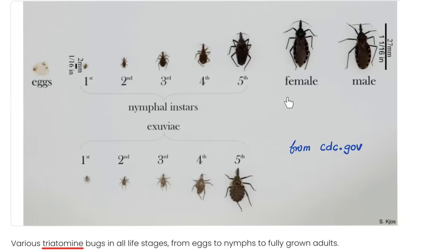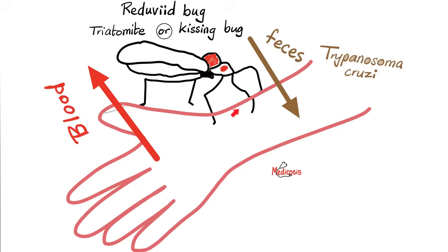Here's the triatomine, or the reduviid bug, or the kissing bug — and these are the eggs. This kissing bug is going to come and bite you, creating an open wound in your skin. Step one: the bug sucks your blood — a warm blood meal for the bug. Step two: the bug defecates in your open wound, and through these feces you get Trypanosoma cruzi.